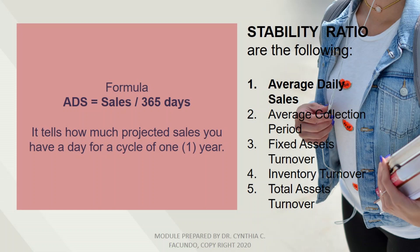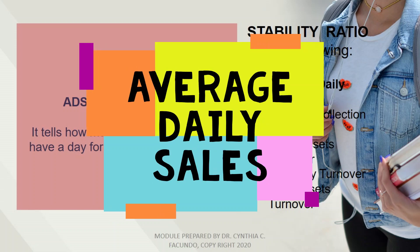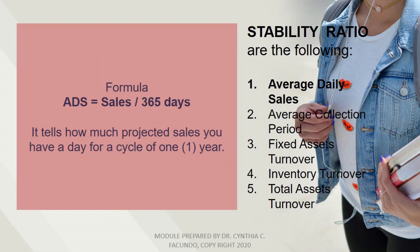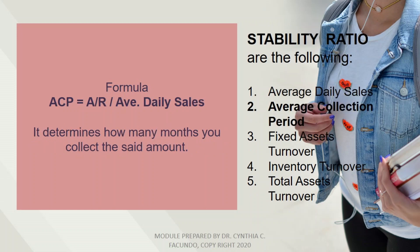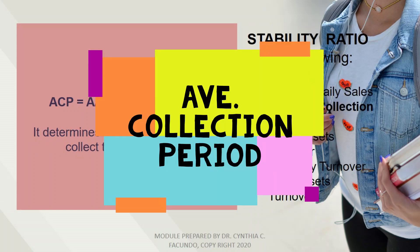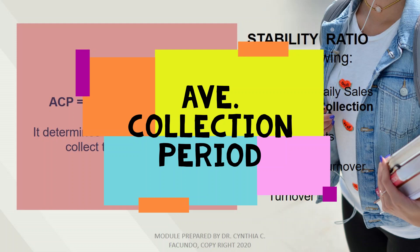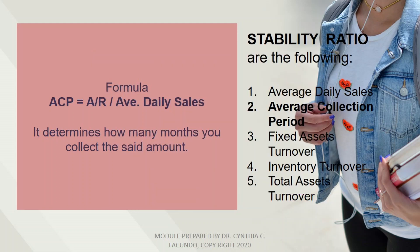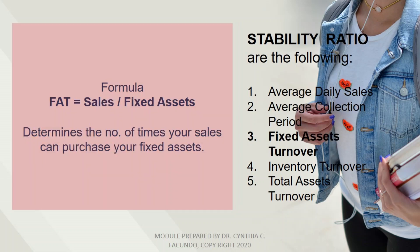Let's start with the formula of average daily sales. The formula is: average daily sales equals sales divided by 365 days. It tells how much projected sales you have per day for a cycle of one year. Next, we have the average collection period. The formula is: average collection period equals accounts receivable divided by average daily sales. It determines how many months you collect the said amount.